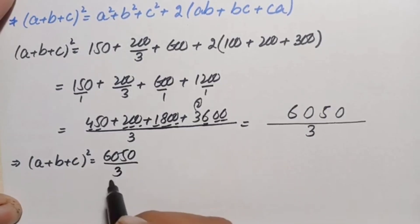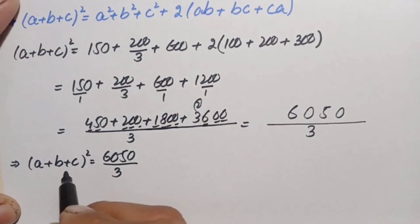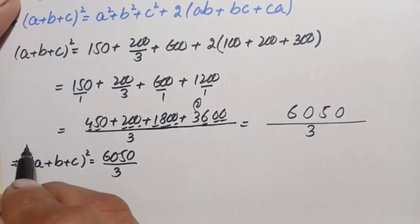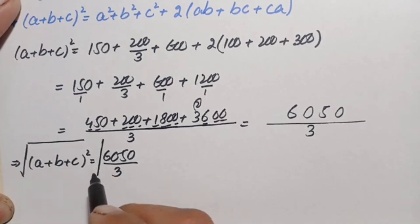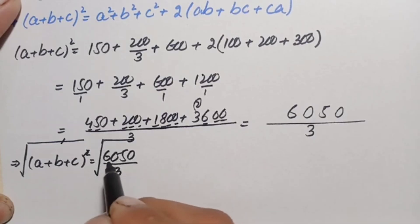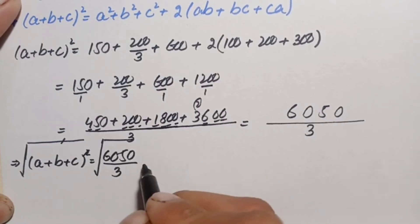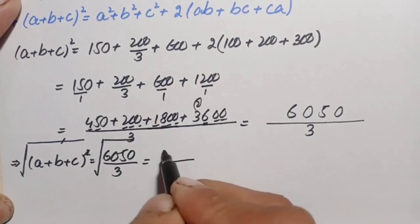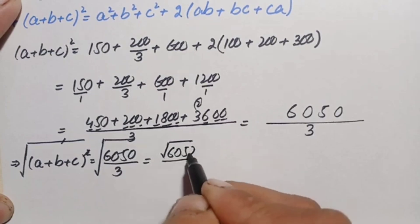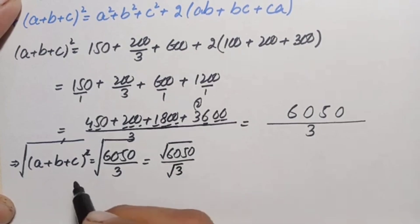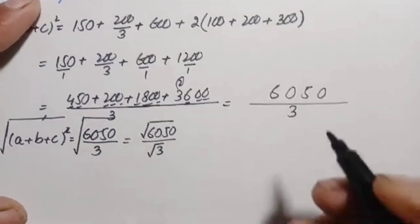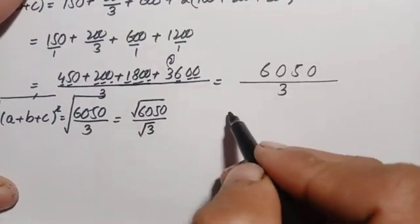To eliminate the square on the left-hand side, we take the square root of both sides. This gives a plus b plus c equals the square root of 6050 divided by the square root of 3. Now we factorize 6050.